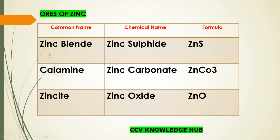Now, zinc ores. The first important ore is zinc blende — chemical name is zinc sulfide, formula is ZnS. The next one is calamine — chemical name is zinc carbonate, formula is ZnCO₃. Next one is zinc oxide — chemical name is zinc oxide, formula is ZnO.